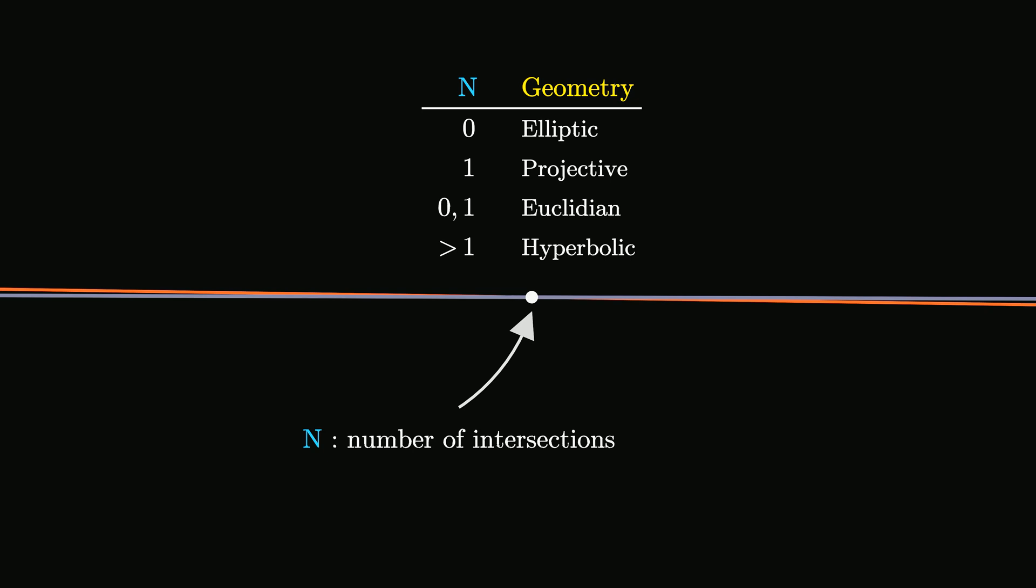The terms point and line are primitive concepts without strict definitions, allowing for variations between different types of geometry. Each geometry system has its own parallel axiom, leading to diverse outcomes. In some geometries, no two lines ever intersect. In others, lines can intersect multiple times.